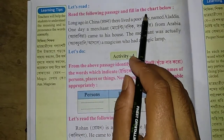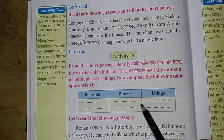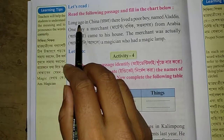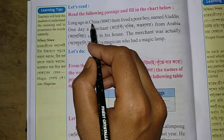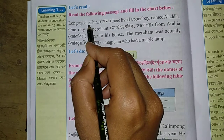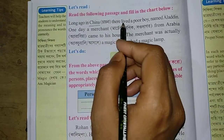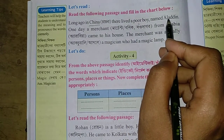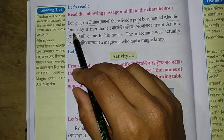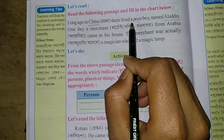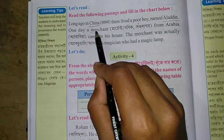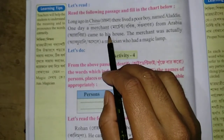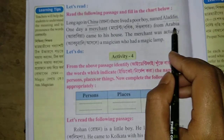Read the following passage and fill in the chart below. Here is the chart. Long ago in China — China is a country name — there lived a poor boy named Aladdin. The name of the boy is Aladdin.